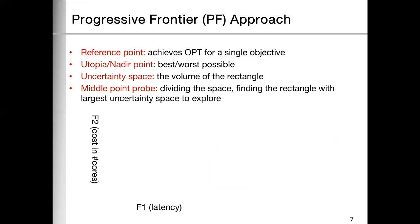Now we come to the technical details of our progressive frontier construction. First, we have some notations. Reference points means achieves optimal result for a single objective. Utopia and Nadir point are the best or worst possible. Uncertainty space, the volume of the rectangle. And we have this middle point procedure.